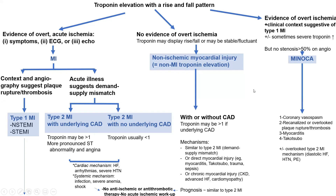The third category is non-ischemic myocardial injury, which could be acute with a rise and fall, or chronic with a steady troponin. The fourth category is MINOCA — MI with non-obstructive coronary. The patient presents as type 1 MI with chest pain, positive troponin, but on coronary angiogram you find no CAD over 50%. This is what you call MINOCA.